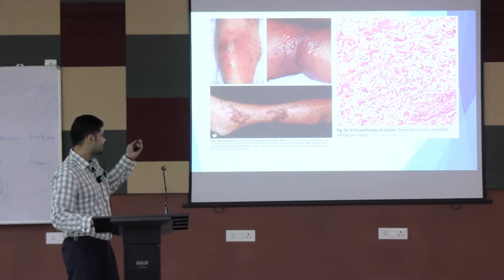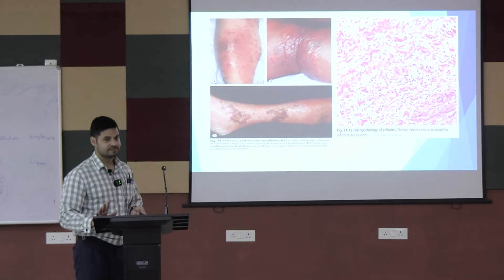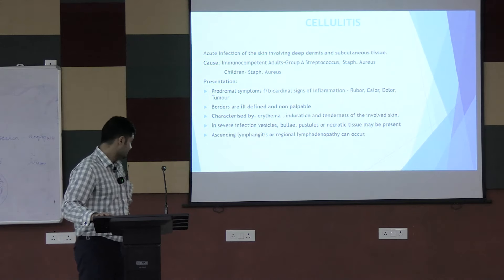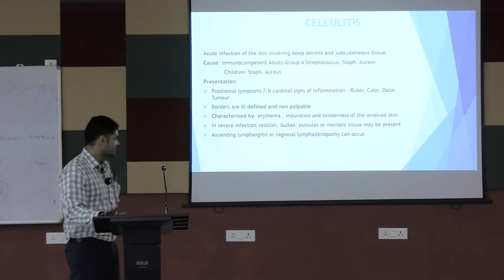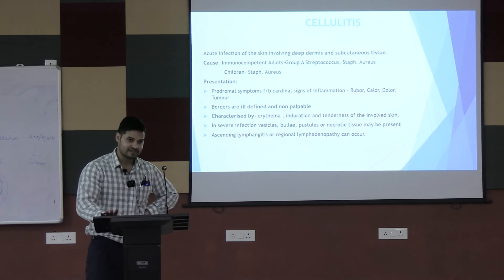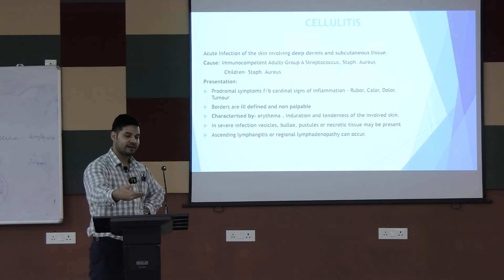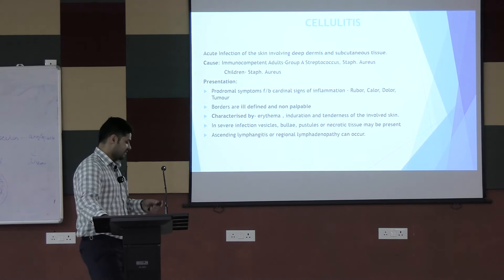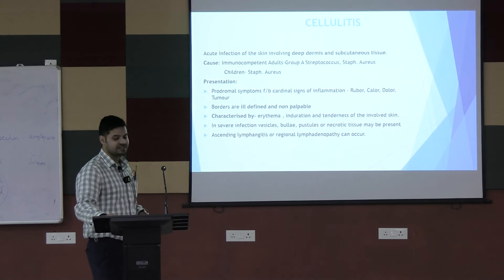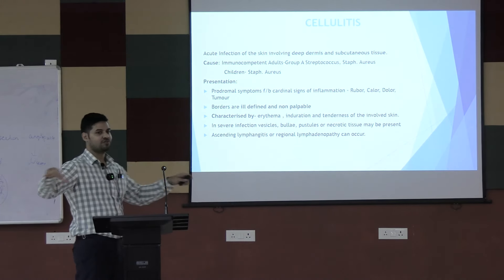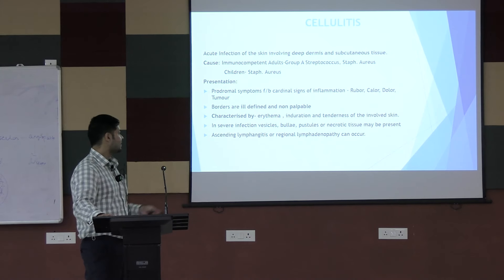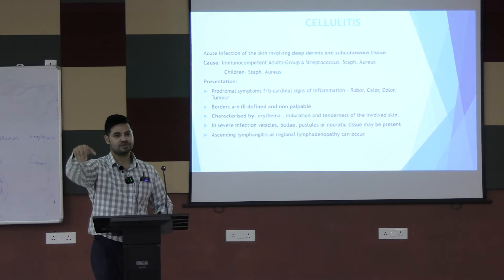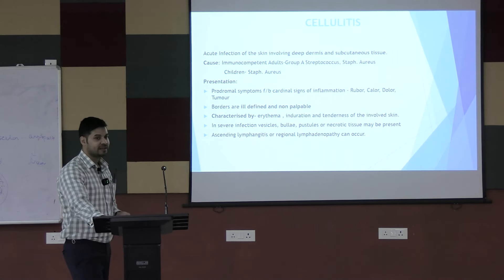Clinically, cellulitis shows erythema, thickening, induration, pus, and significant tenderness. Lesions progress from papule to vesicle to bulla, then rupture to form pus and necrotic tissue. Lymphadenitis may develop in regional lymph nodes. Complications include osteomyelitis, lymphadenitis, bacterial endocarditis, and lymphatic drainage obstruction.